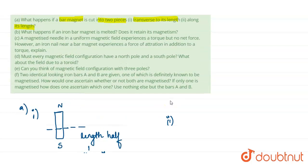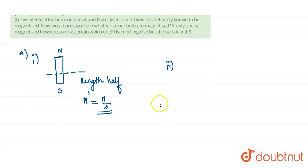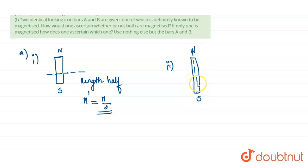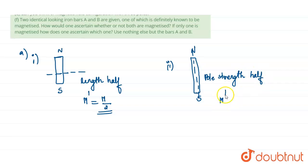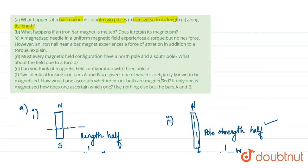In the second case, the bar magnet is cut along its length. The bar magnet is placed in the same direction with north pole and south pole, and cut along its length. What happens is that the pole strength is divided — pole strength becomes half. So the new magnetic moment also becomes half of the original magnetic moment because pole strength becomes half.